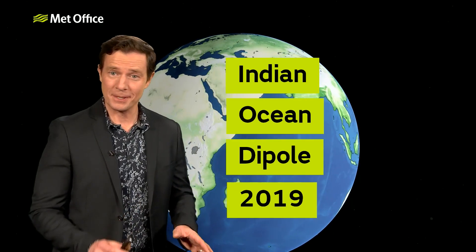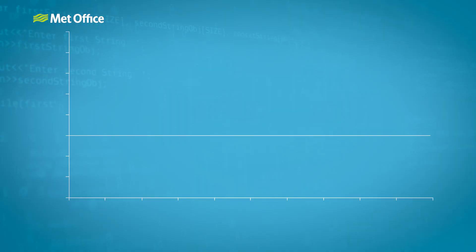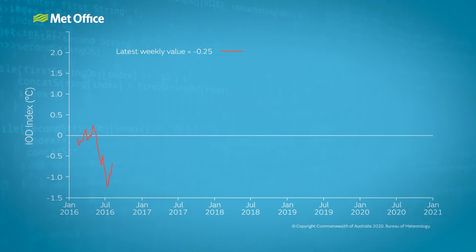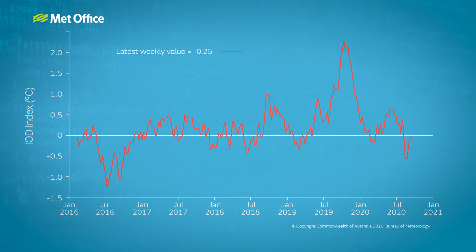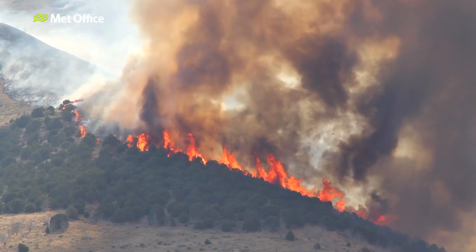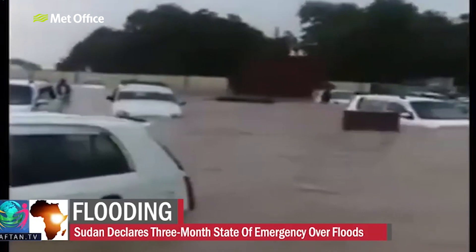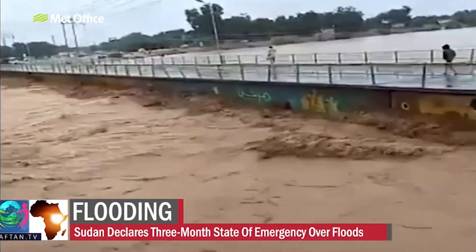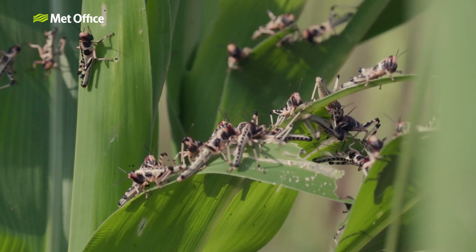In the northern hemisphere autumn of 2019, the IOD was extremely positive — the highest ever recorded, in fact. This record-breaking IOD had huge impacts on weather patterns across many countries. The resulting drought in Australia led to one of the most severe fire seasons on record. Meanwhile, in Africa, the excess rainfall created devastating floods, and the warming seas are also thought to have contributed to a severe locust season.